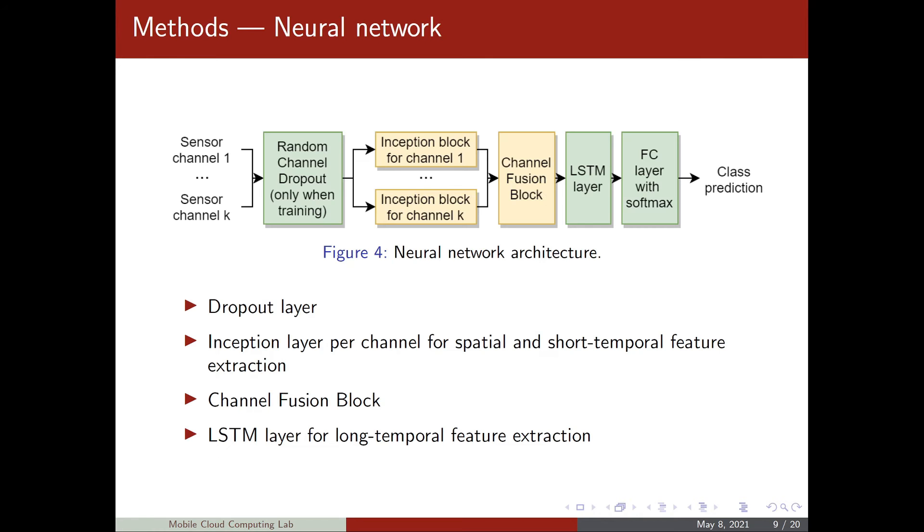We move on to the neural network architecture. Here we have the sensor channels at the input and the first layer is a random channel dropout layer, which means that only during the training, some channels are dropped out. We imply this dropout so that our neural network is robust to different combinations of sensor channels. After the dropout come the inception blocks. There is an inception block for each sensor channel. Inside these inception blocks, there are basically a handful of convolutions.